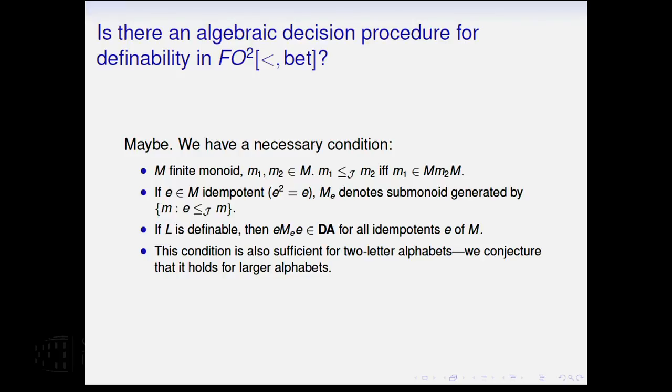So the condition is this. It's a little involved, but there's this thing called the J-ordering on finite semigroups that M1 is J below M2 if M1 belongs to the two-sided ideal generated by M2. And what you do is you take, for each idempotent, you take the submonoid generated by elements that are J above the idempotent. Then you can form another monoid inside the monoid, and the criterion is that this little monoid is in DA. So I'll try to wrap it up.